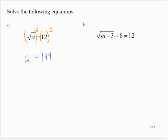The first thing that we're going to do here is isolate the square root. So to do that, I will subtract 8 from both sides. So then, the square root of m minus 3 is equal to 4.